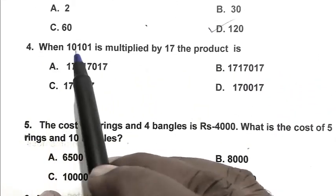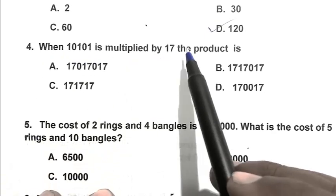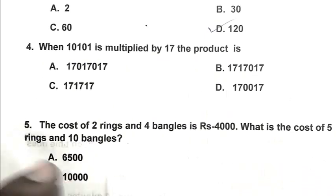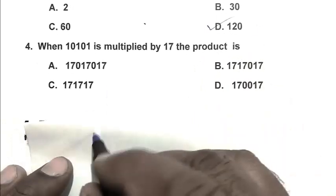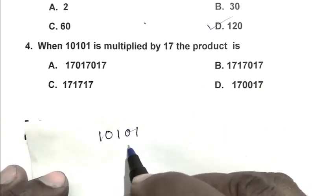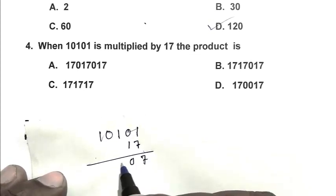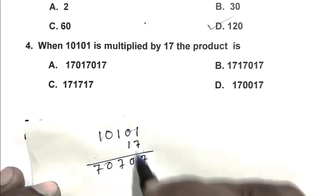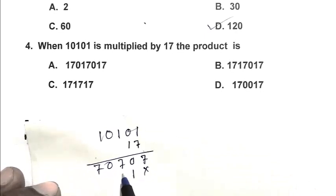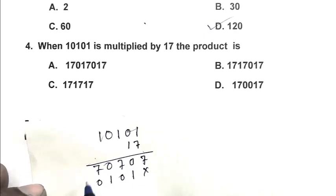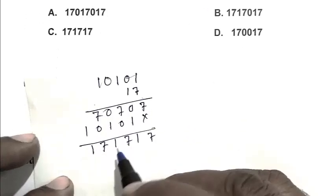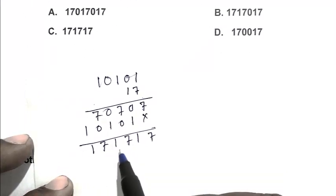Question number 4. When 10,101 is multiplied by 17, the product is. So friend, the number is 10,101. We multiply it by 17. We get 7, 0, 7, 0, 7. After that, 1, 0, 1, 0, 1. That is 171717. So friend, C is the right answer.